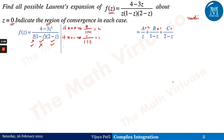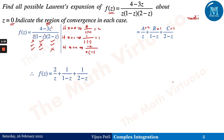For C, put z = 2 — that gives (4 - 6) divided by 2 times (1 - 2), which is -2 divided by -2, giving C = 1. So the values A = 2, B = 1, C = 1 are obtained. The function is now separated using partial fractions. Then f(z) is not analytic at z = 0, z = 1, and z = 2.